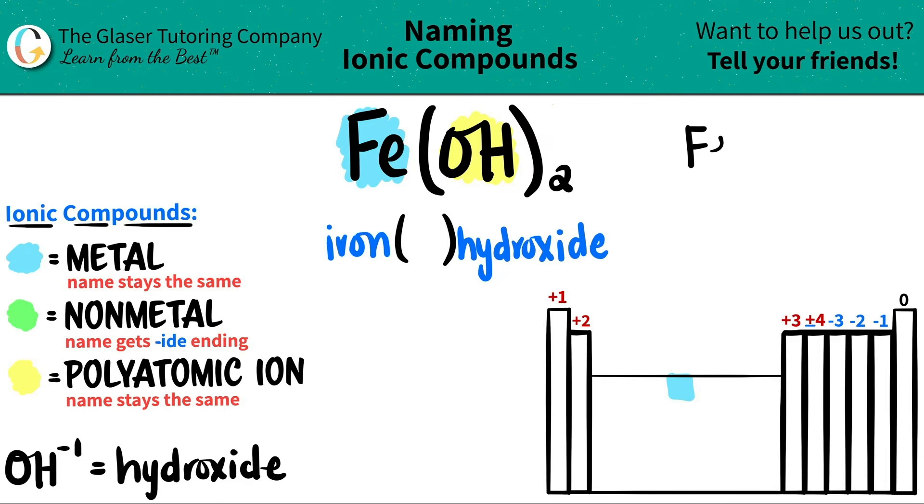Well, how do we find that out? That's pretty easy. What we're going to do is say how many we have of each, the metal and the polyatomic, crisscross those subscripts up, and get the charges.